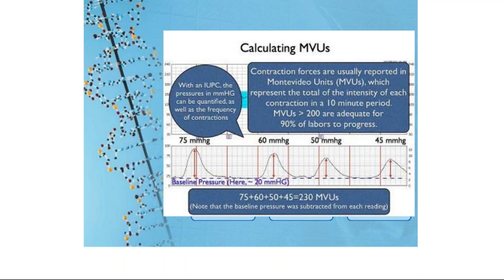Internal monitoring using an IUPC — intrauterine pressure catheter — tells you about intrauterine pressures. The baseline pressures are around 20 mmHg, which is necessary for cervical dilatation. Contraction forces are reported as Montevideo units (MVU). You add the pressures of all contractions in 10 minutes — for example, 75 + 60 + 50 + 45 = 230 MVU. Any MVU more than 200 is adequate for normal labor. When measuring pressure, always subtract the basal tone first. This is only possible with internal monitoring, not external.